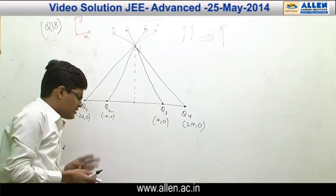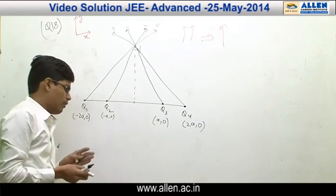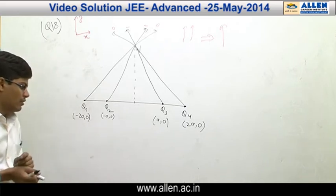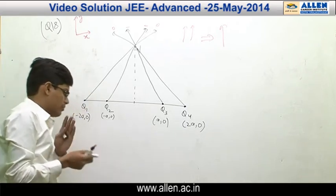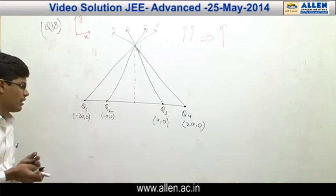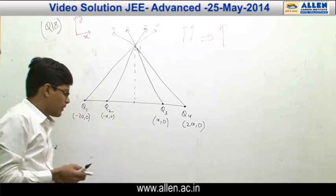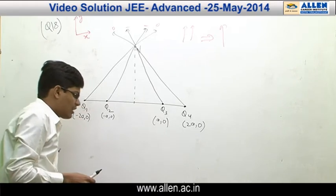Interestingly, P has answer 3 in option A and C only. In A and C both have Q as 1. So it is useless to check Q as 1 because both will have the same answer. Now let us check R.